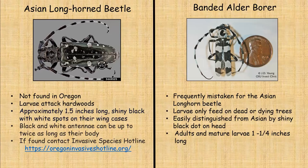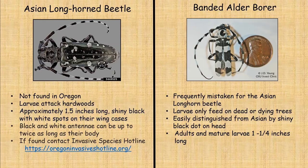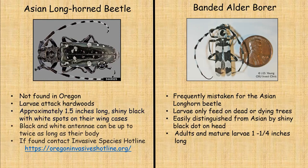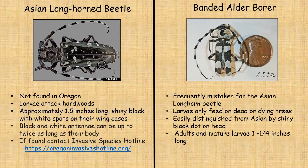There are two beetles so similar-looking that people get quite panicky when they see one. The Asian longhorn beetle is a very destructive pest, but so far none have been found in Oregon. The banded alder borer is frequently mistaken for the Asian longhorn beetle, and when people see it they start to panic. If the Asian longhorn beetle got a hold in our area, it would be devastating to our hardwoods because the larvae attack hardwood trees. The Asian longhorn beetle is about one and a half inches long with a shiny black body and white spots on its wing cases.